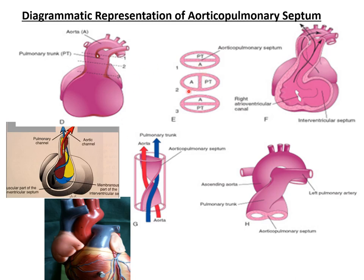An illustration of an adult heart shows the aorta emerging from behind the pulmonary trunk at the level of the ventricles, then sliding to the front as you move upward. This spiraling is necessary for proper connectivity — connecting the aorta with the left ventricle and the pulmonary trunk with the right ventricle.